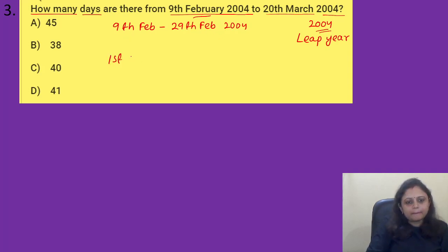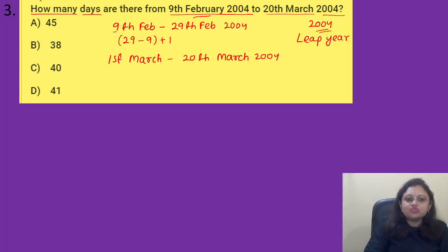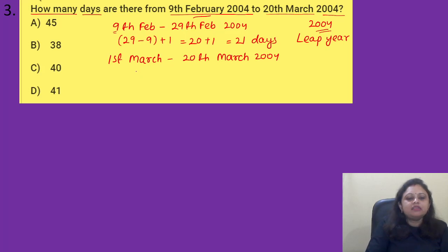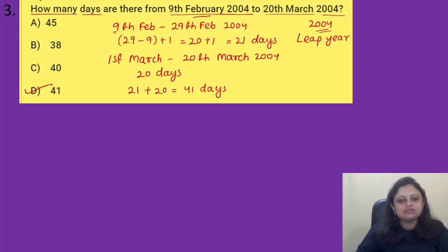Then from 1st March 2004 to 28th March 2004. From 9th February to 29th February, that is 29 minus 9 plus 1 — we add 1 because we are including the first date also. That will be 20 plus 1 equal to 21 days. And from 1st March to 28th March, it is directly 28 days — wait, 1st to 28th is 28 days. So total is 21 plus 20 equal to 41 days. The correct answer is option D, 41 days.